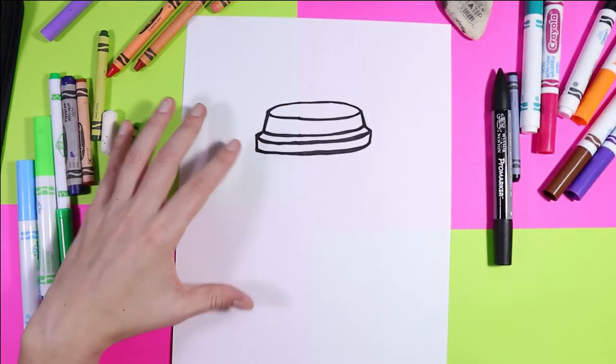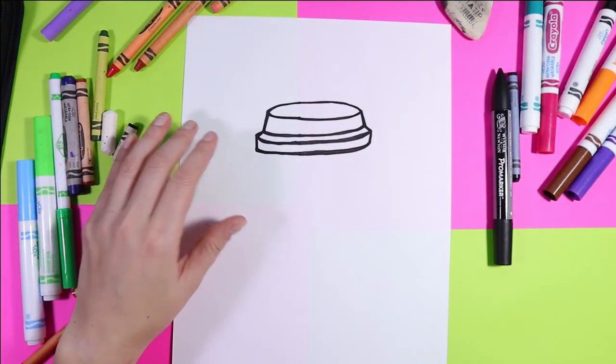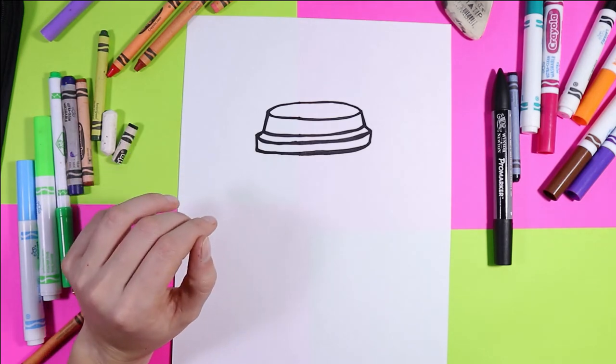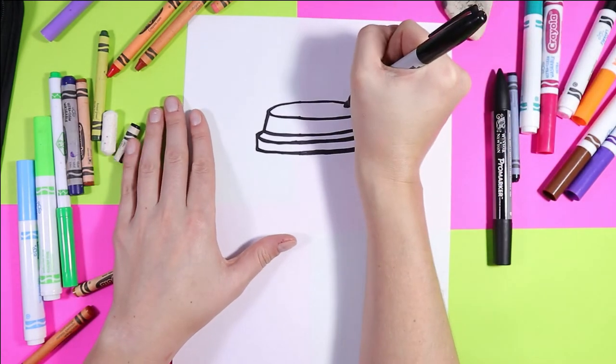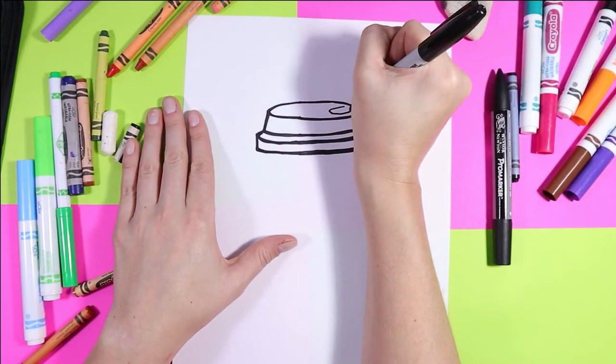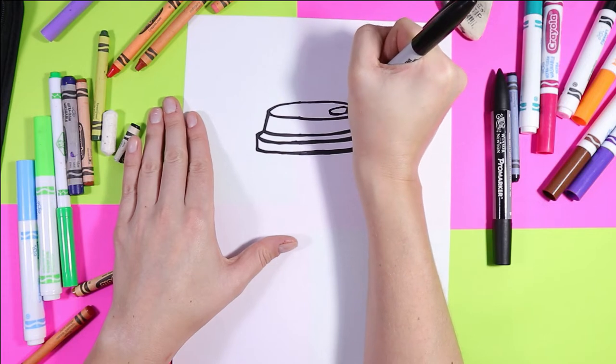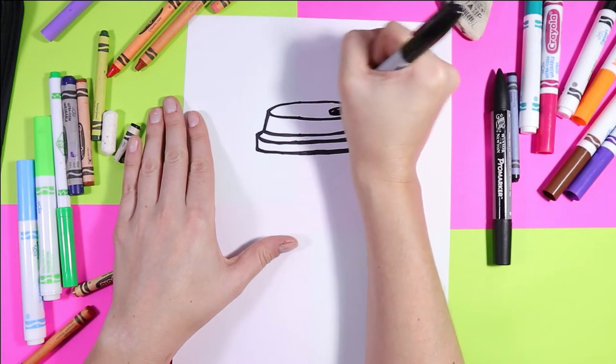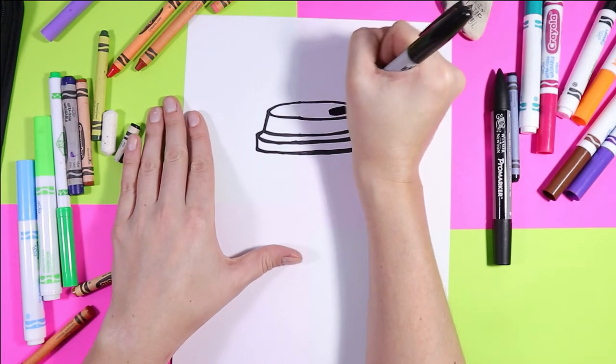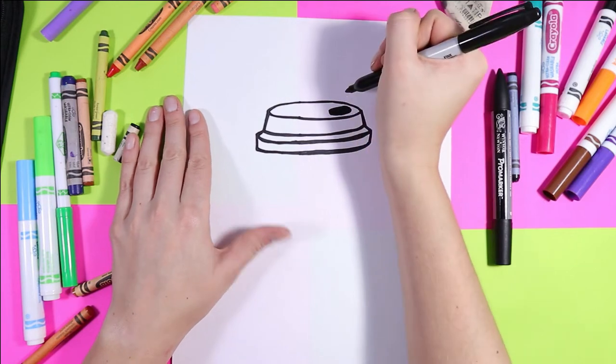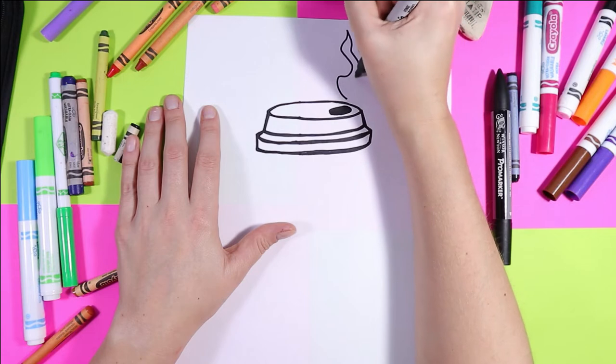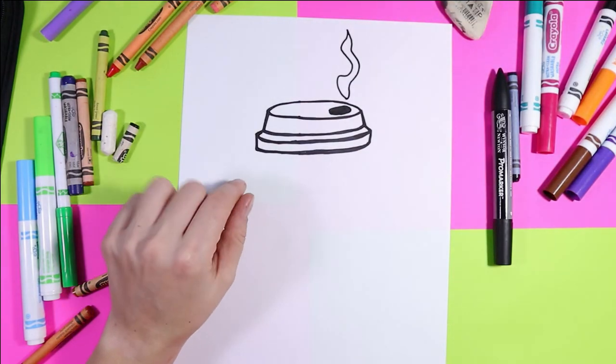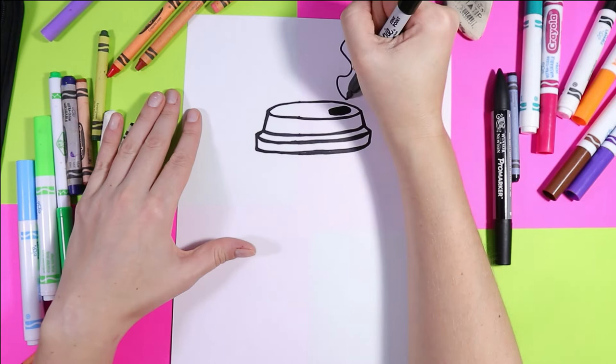Perfect. And once you have that done, we're going to draw the rest of the cup. So first we need to draw the hole where the coffee is sipped out of. So on one side of the lid, draw an oval and color it in black. And of course, because this is a steaming hot cup of coffee,